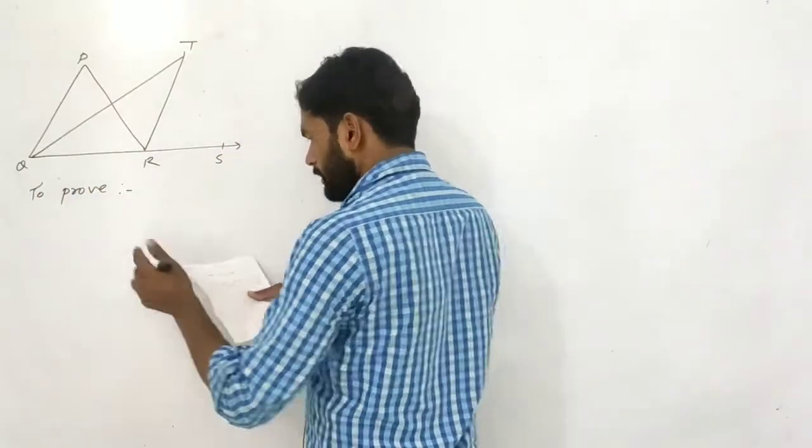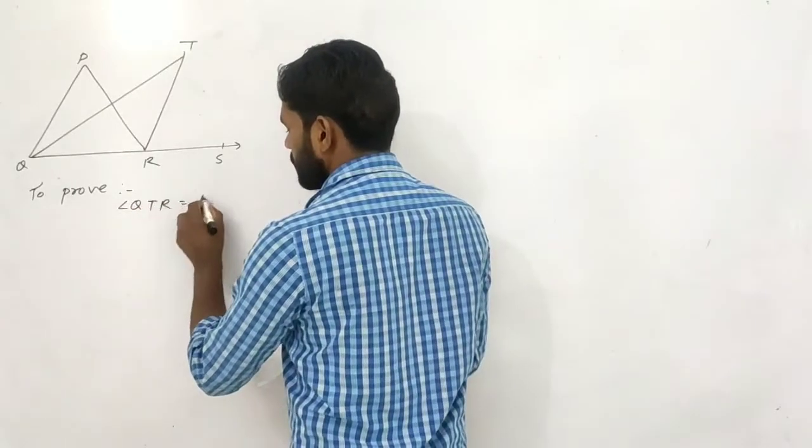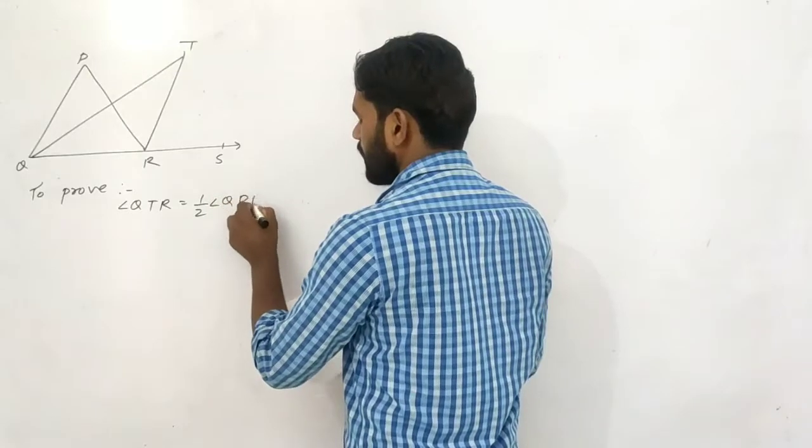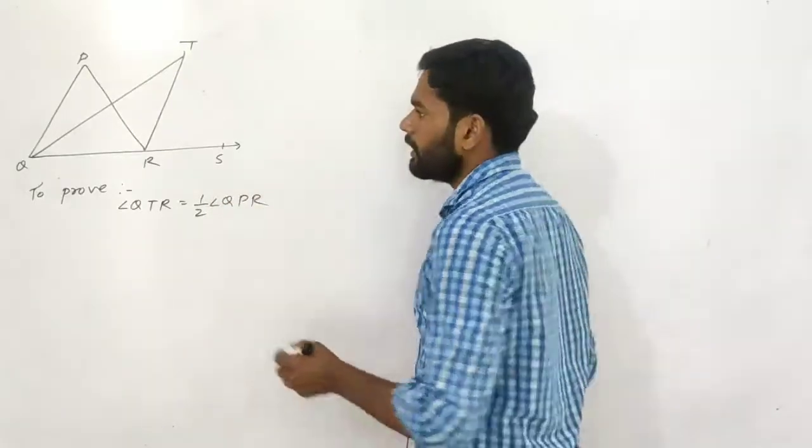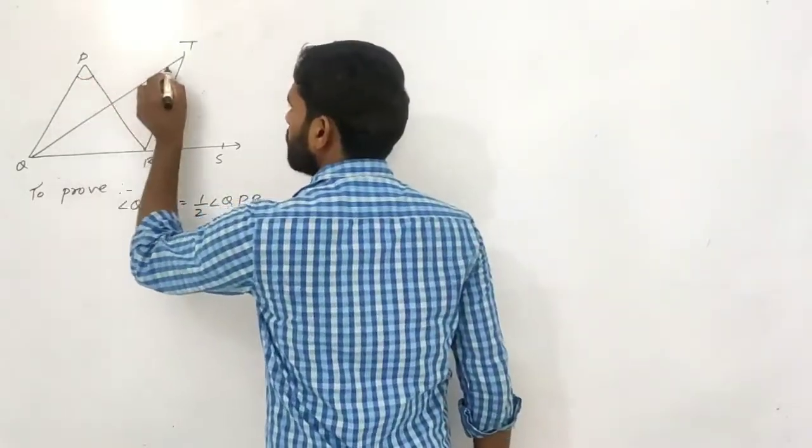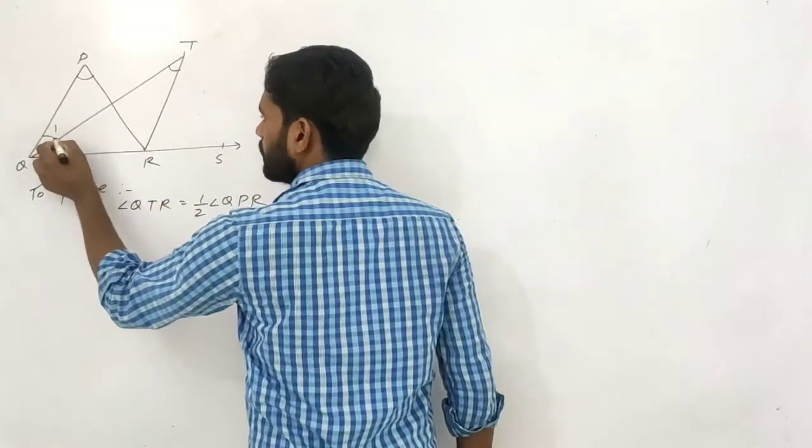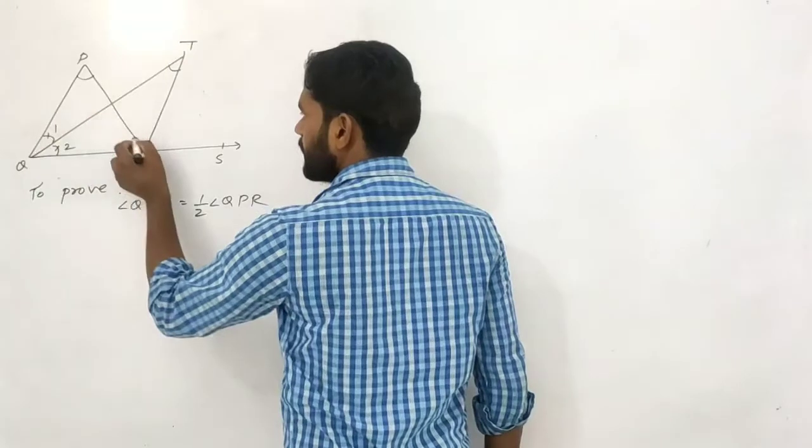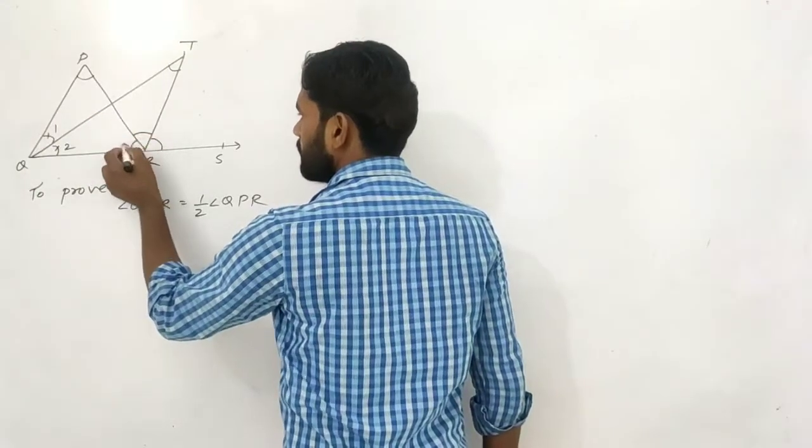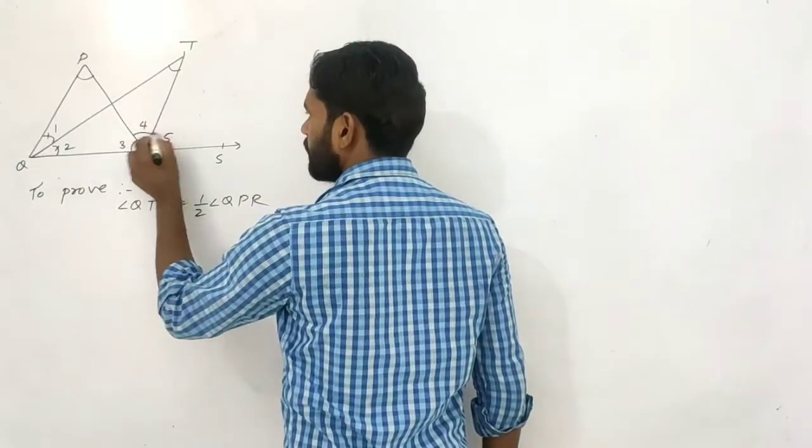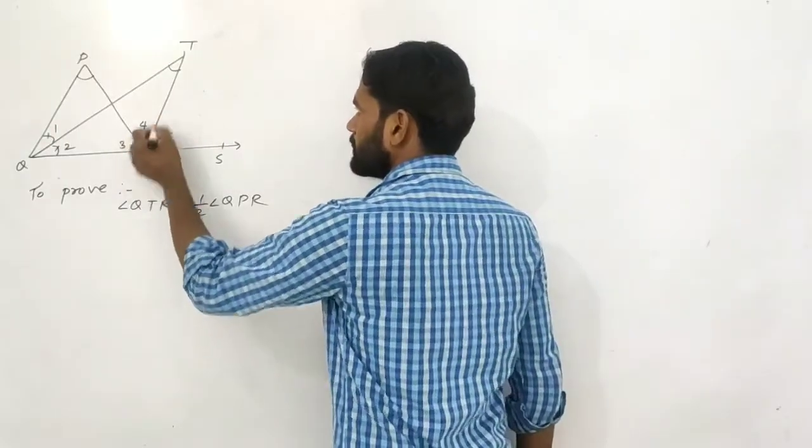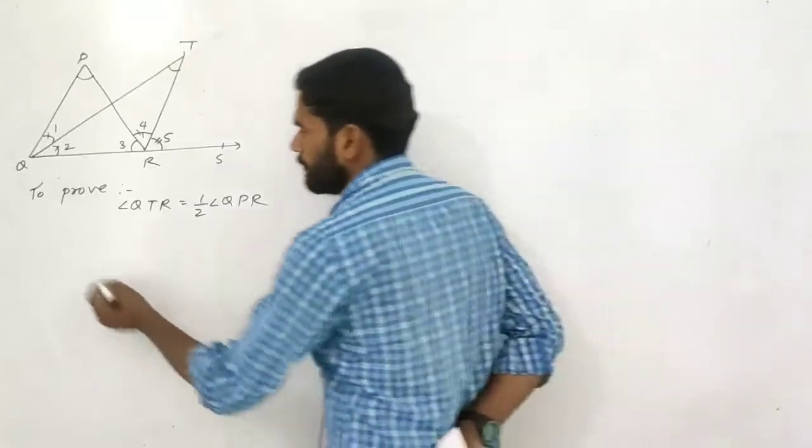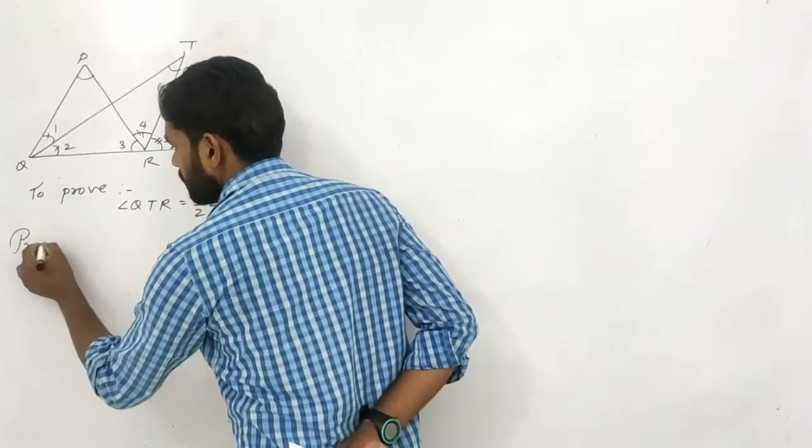We have to prove: angle QTR equals half of angle QPR. This is what we need to prove. QT and RT are bisectors of their respective angles in triangle PQR.